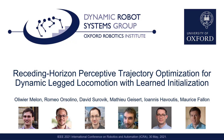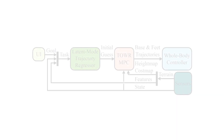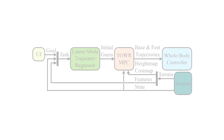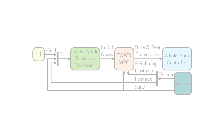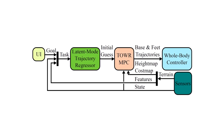In this paper we present a perceptive receding horizon planner, Tower MPC, which can be initialized by a neural network LMTR to offset computation time. This approach enables non-linear trajectory optimization that anticipates upcoming terrain.